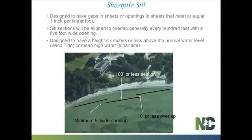Sill sections should overlap, and following the general permit — developed with review from regulatory and resource agencies — you should leave an opening every 100 feet. For high-energy or longer shoreline situations, longer sections with bigger openings may be acceptable. A minimum five-foot opening in the overlap is standard, generally not more than about 10 feet. The purpose is to allow water circulation and aquatic life movement in and around the sill.